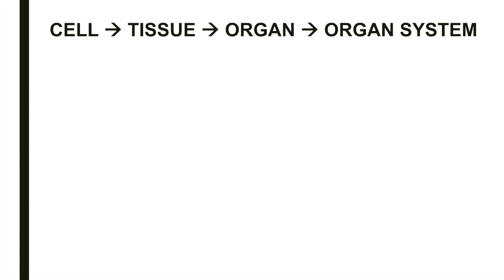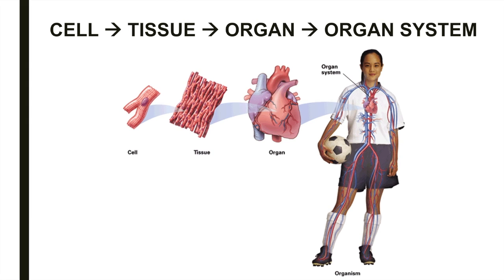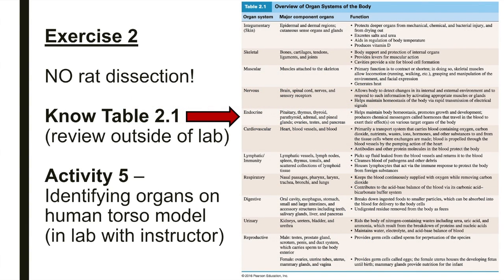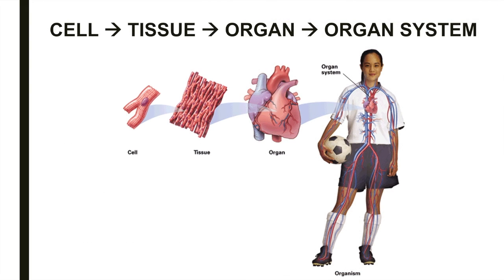Do keep in mind this foundational progression: cell, tissue, organ, organ system. The cell is the basic unit of life. Cells that are similar in structure and function form tissues. Two or more tissue types performing a specific function form organs, and a group of organs acting together form an organ system. Please read and review the information in exercise two before coming to lab. Note that you'll not be doing a rat dissection, but you're still responsible for understanding the basic functions of the organs listed throughout the dissection activity. You'll omit activities one through four, but complete activity five. We'll dive deeper into tissues, organs, and organ systems throughout the remainder of this semester and into Anatomy and Physiology 2.